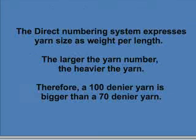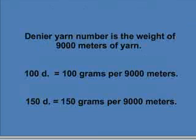Direct systems refer to yarn numbers where, as the number gets larger, so does the size of the yarn. These systems are typically used for filament yarns, but not exclusively. Common direct systems are denier, tex, and desitex. An example of the size relationship of the direct system is that a 100 denier yarn is larger than a 70 denier yarn. For direct systems, the direct yarn number equals the weight of the specified length of yarn.